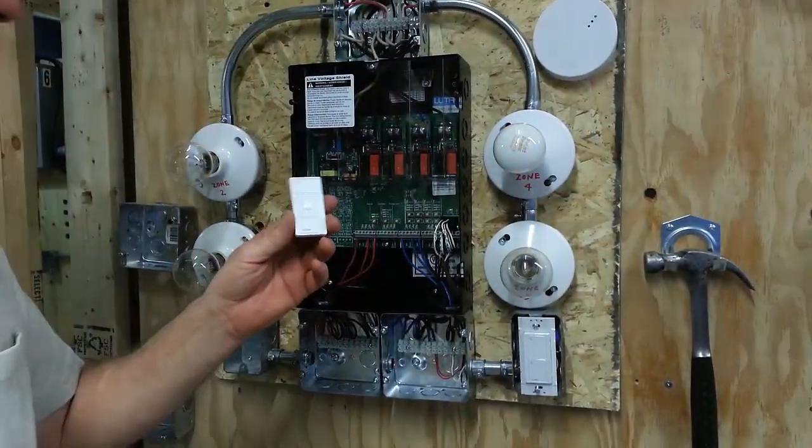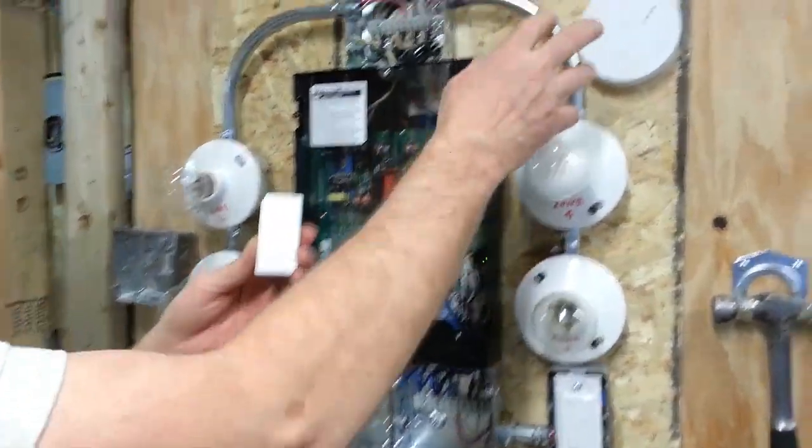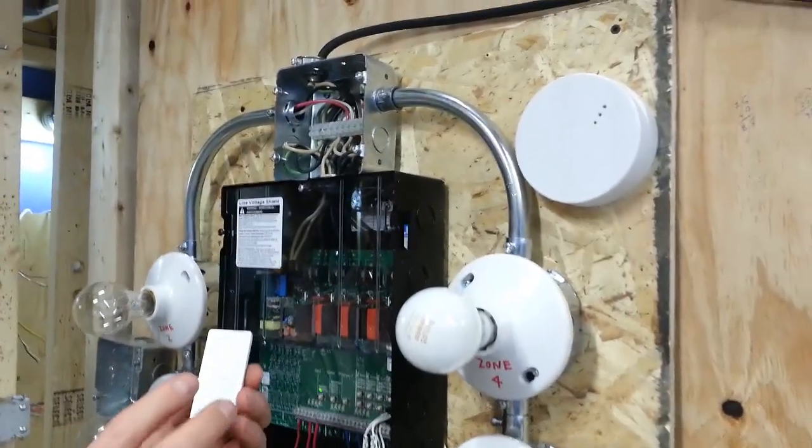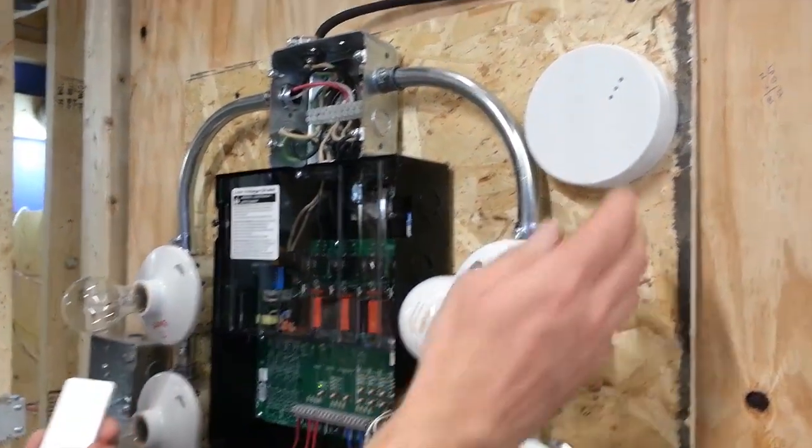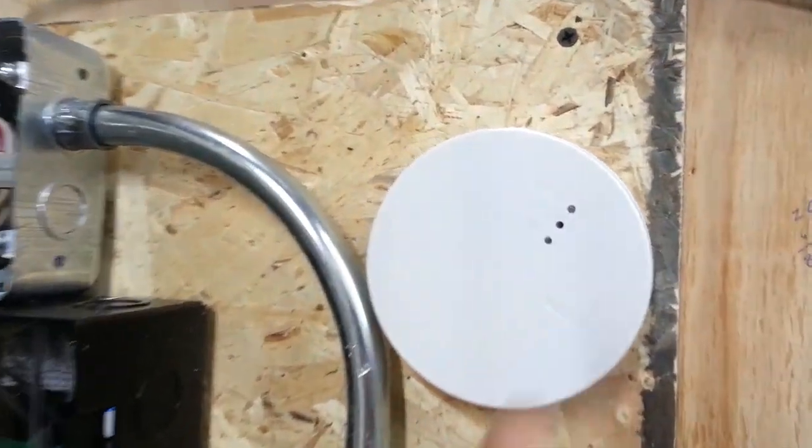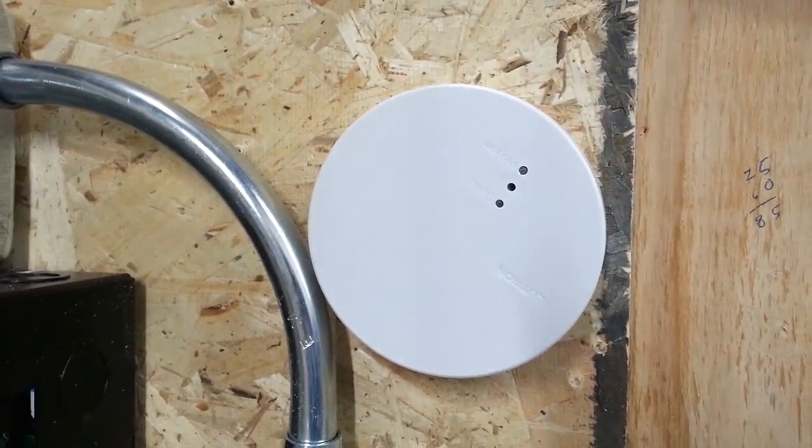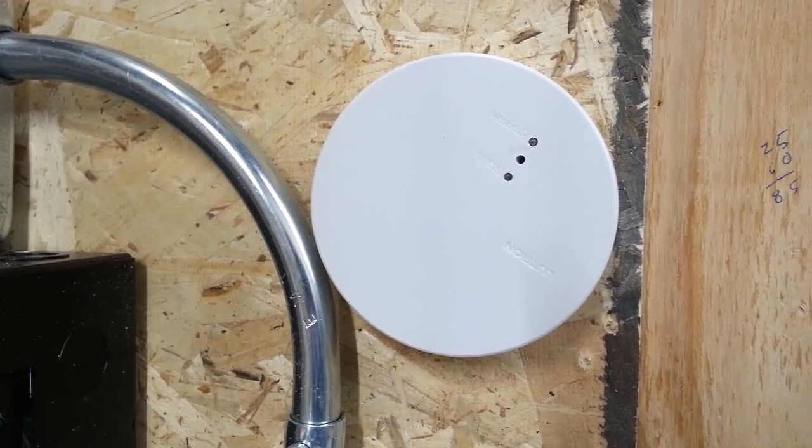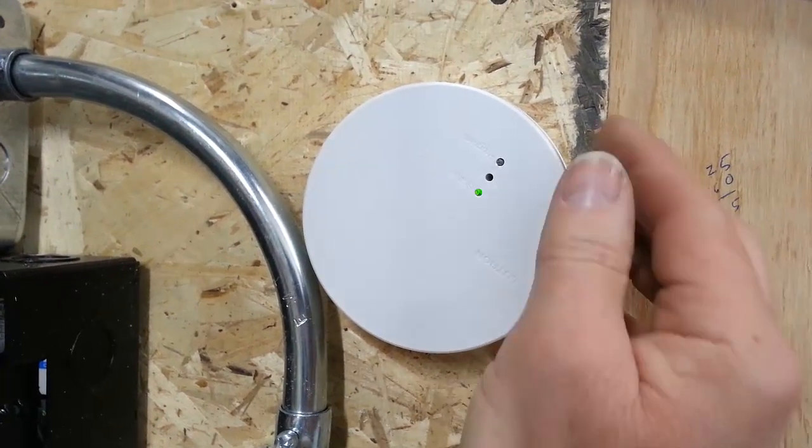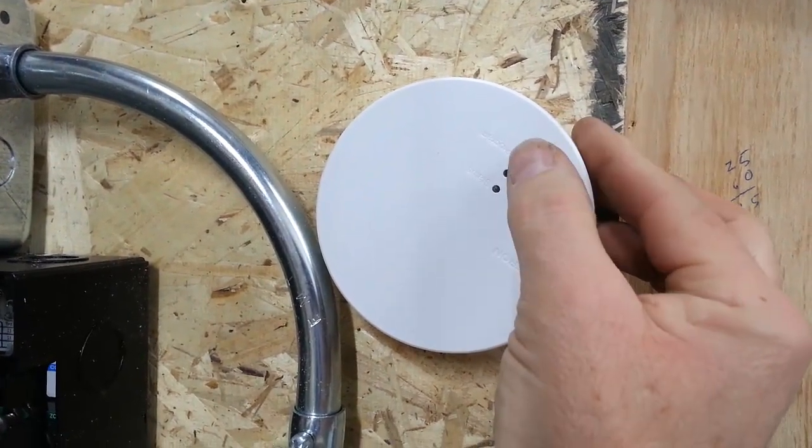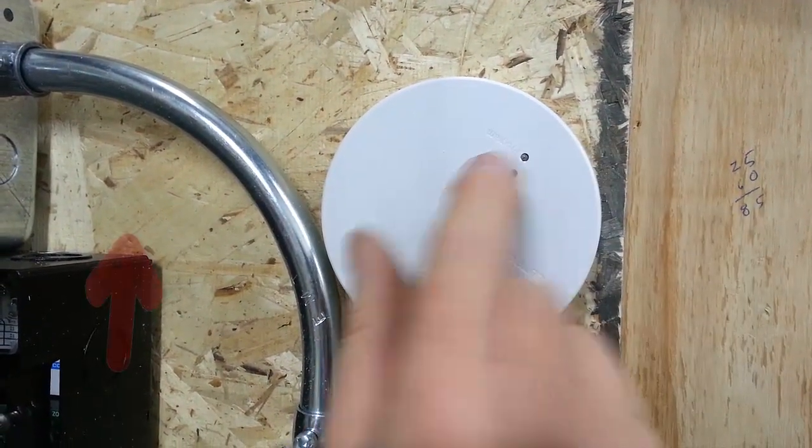We'll turn that one off and we will start. This is already controlled into it. We have to program the remote into the QSM unit and then program the RF switch into the panel itself. So, this is how you program the RF switch into this QSM unit. First of all, you press the program button.